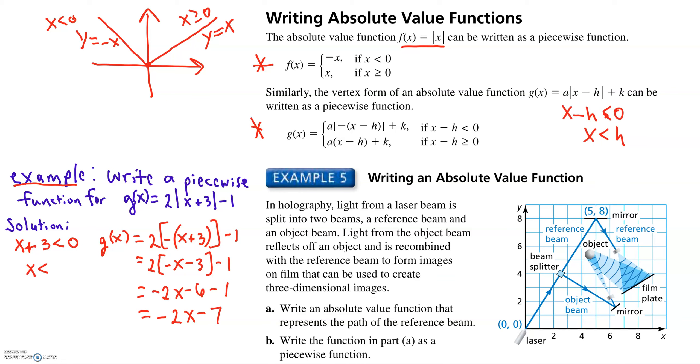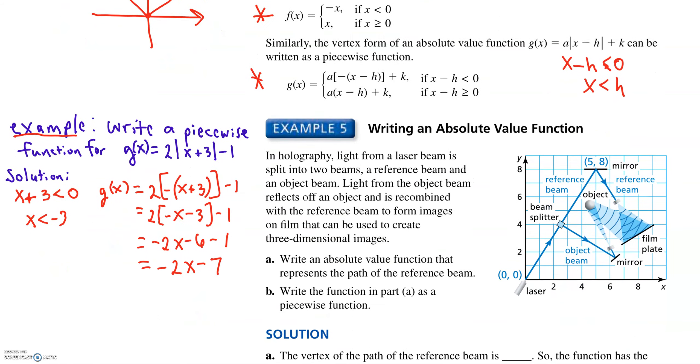So there's half of the function. That's the half where x is less than negative 3. Now let's do the other half.